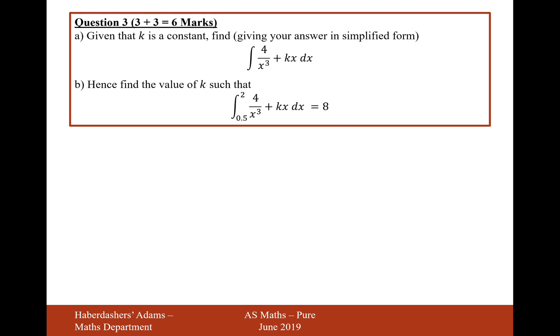So question 3 says, given that k is a constant, find, giving your answer in simplified form, the integral of 4 over x³ plus kx dx. So that'll be the first thing we'll do.